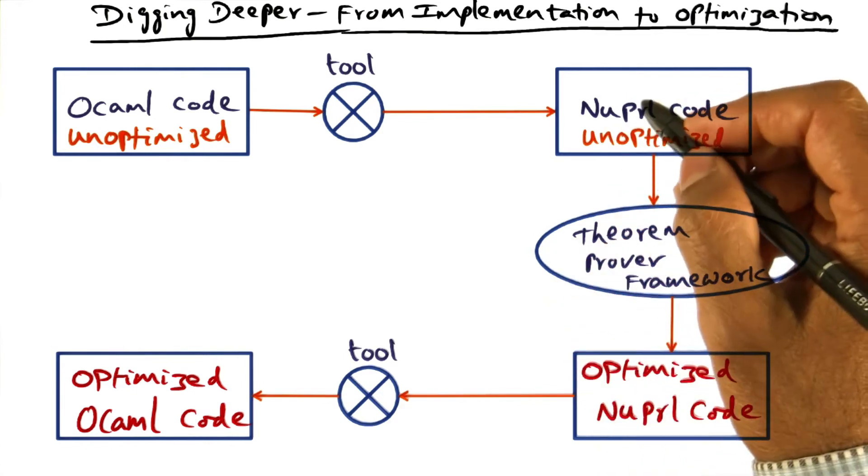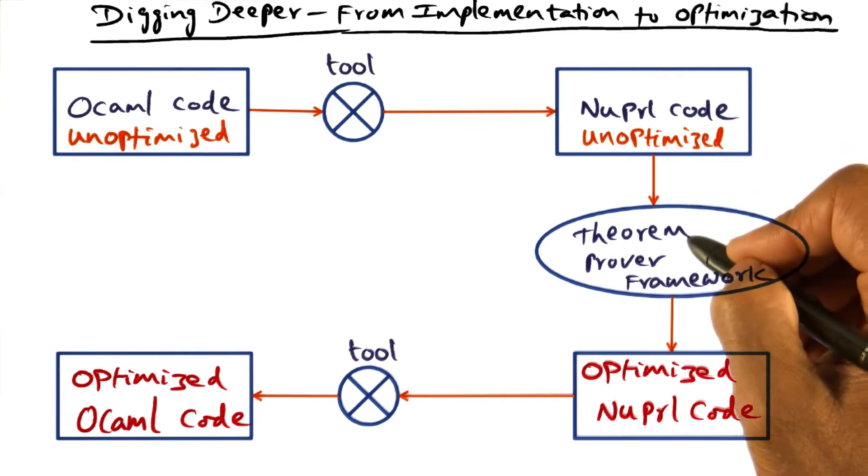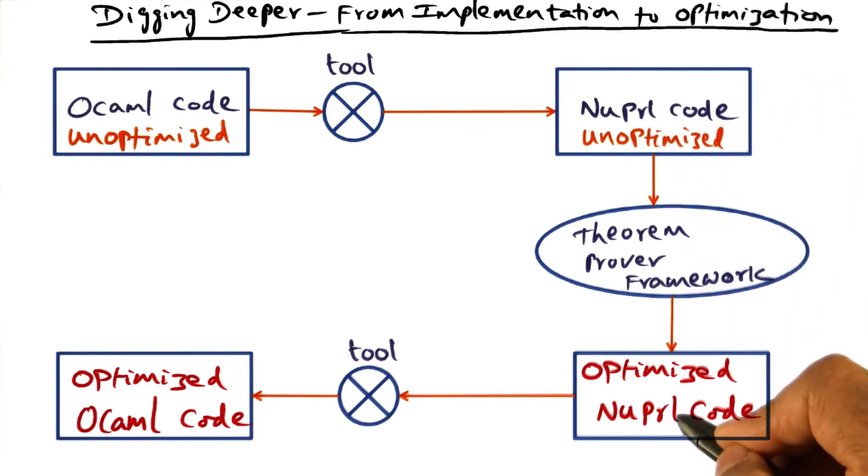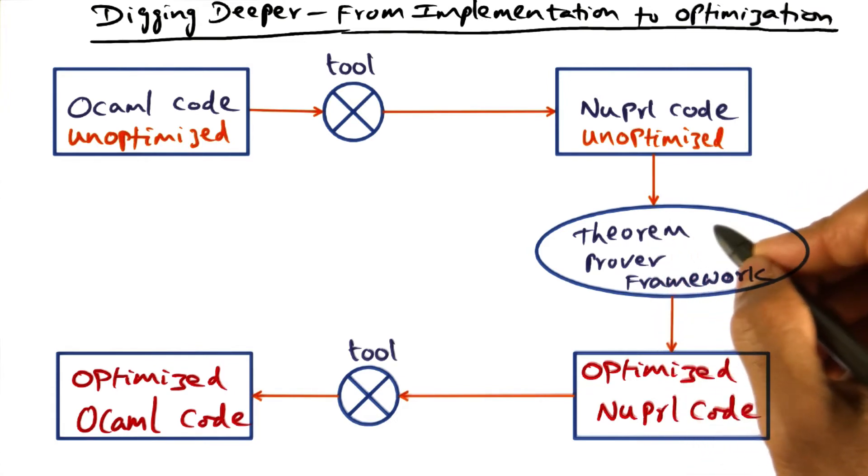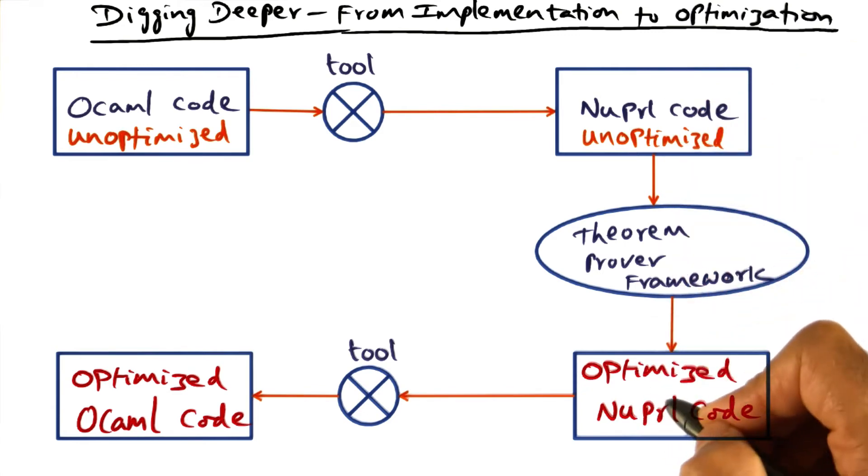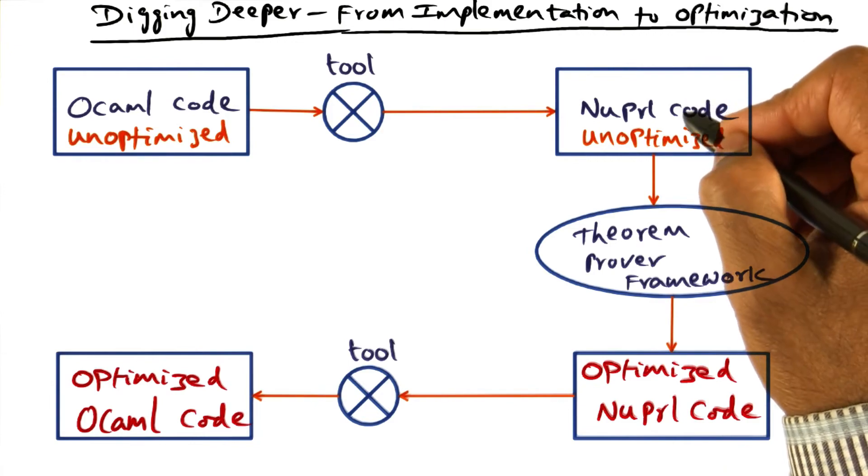And what we can do with this theorem proving framework is convert this new PERL code to optimized new PERL code. And through a whole series of optimization theorems that are in this framework, we can actually show that the optimized new PERL code is equivalent to the unoptimized new PERL code.